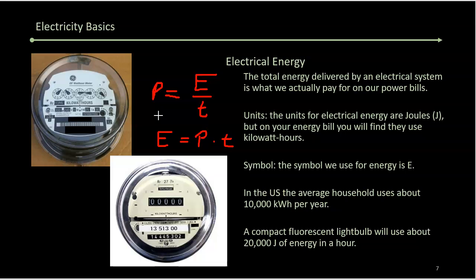And so if you look at the energy scales we're talking about, average household, 10,000 kilowatt hours. A kilowatt hour is the standard in the power industry. And then a fluorescent light bulb will use about 20,000 joules in an hour. Those are the scales we're at.